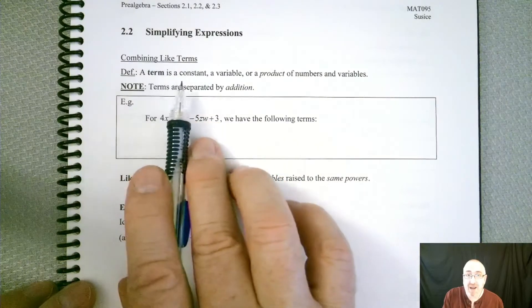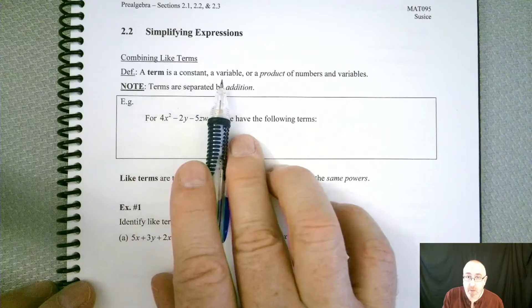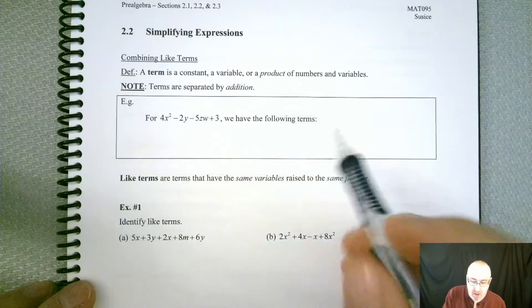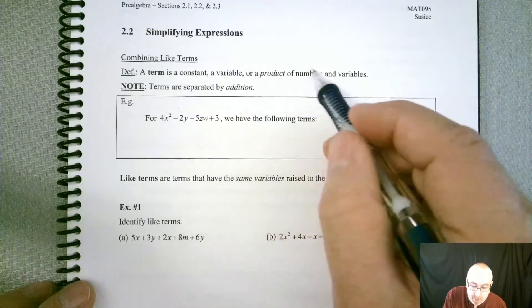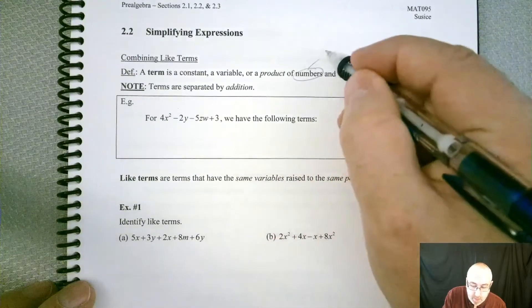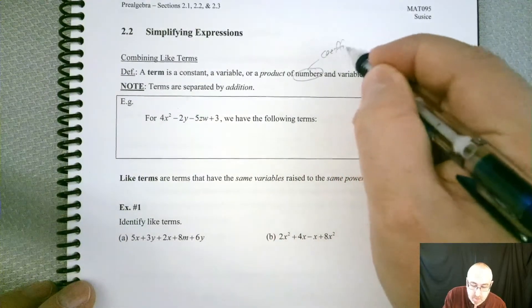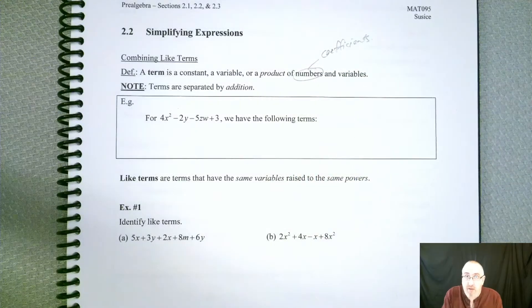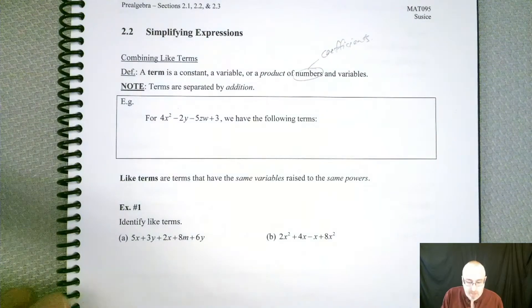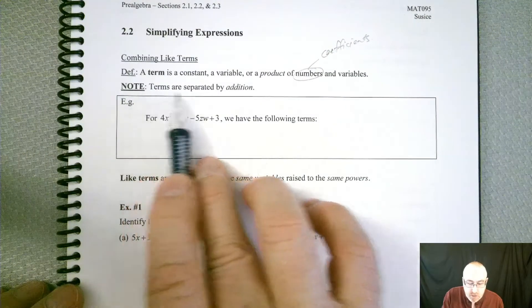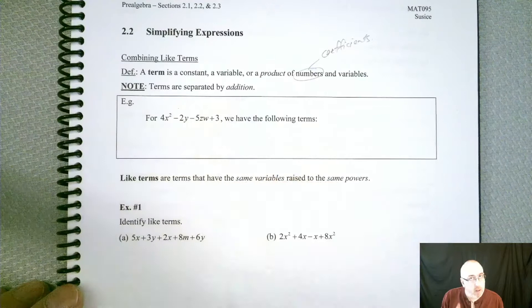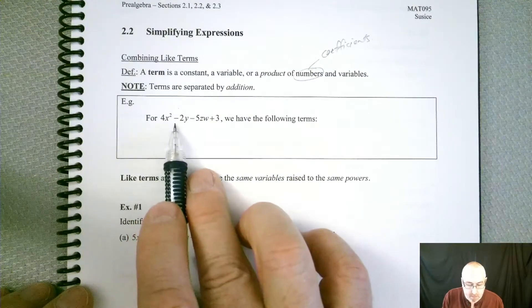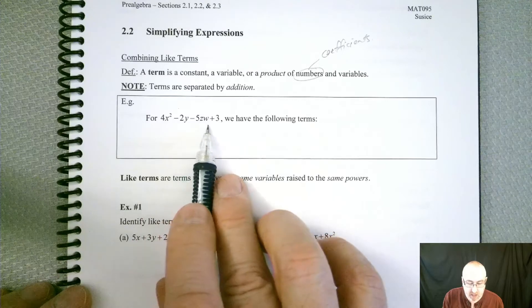So the first thing we need to know is what a term actually is. So by definition, a term is a constant, a variable, or a product of numbers and variables. And because it's a product, remember, these numbers are coefficients. So you might have coefficients and variables mixed together as a product. Now note, terms are separated by addition.